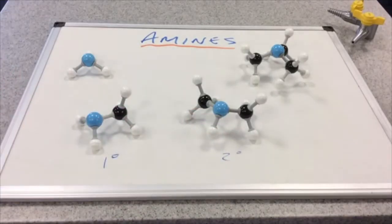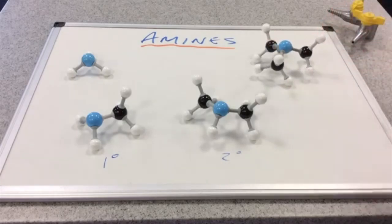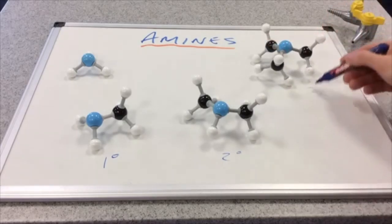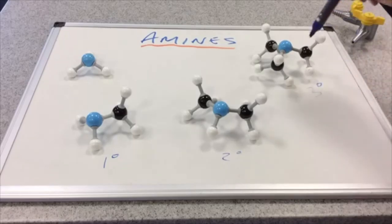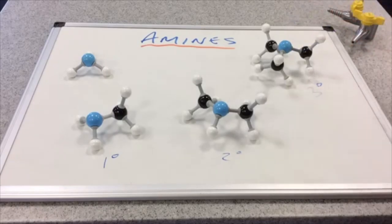The final amine in the corner here, this is a tertiary amine. You can see there are three carbons directly bonded to the nitrogen. And as a result there are no hydrogens bonded to this nitrogen. This is called trimethyl amine.